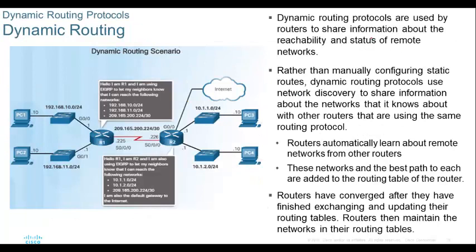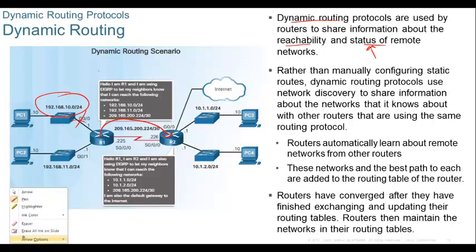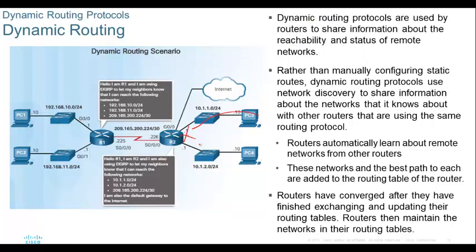Dynamic routing protocols are used by routers to share information about reachability and status. This is what a dynamic routing protocol is. It has a mechanism to update the status. For example, when a link goes down, this router will inform the other router: 'Hey, that link has gone down — remove that route immediately.' The router will remove the route, so when a packet comes, the router itself will say 'I cannot forward it' because there is no destination available.